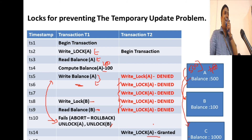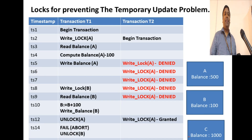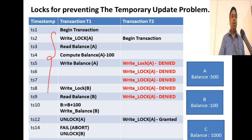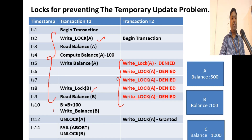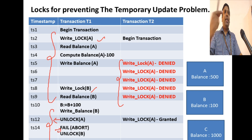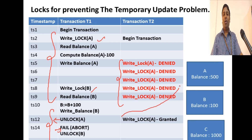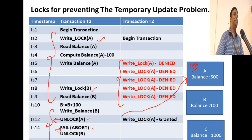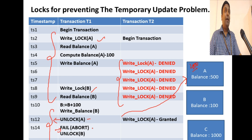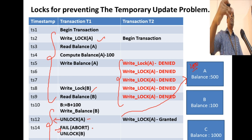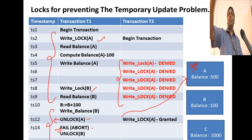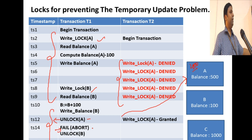But consider this edge case: in the shrinking phase, T1 unlocks A, and at that moment T2 grabs the lock and reads A = 400. Then T1 fails before unlocking B. T2 has already read T1's partial update, so the temporary update problem still occurs. You can unlock and then fail — this is still a vulnerability in basic two-phase locking.